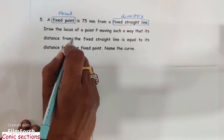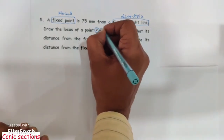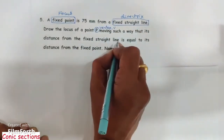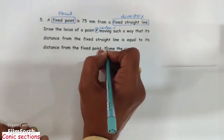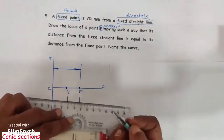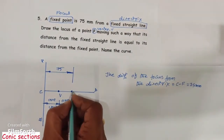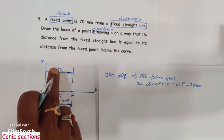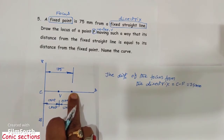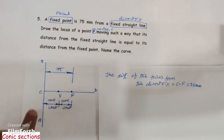Based on the eccentricity value we will name the curve. The vertex point V is named such that the vertex point V's distance from the fixed straight line is equal to its distance from the fixed point. The distance of the focus from the directrix is 75 mm. If we consider the distance of the focus from vertex as one unit, then the distance of the vertex from directrix also becomes one unit.